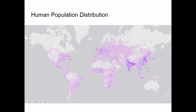One of the things you'll notice is that in the United States, we see this line that divides the eastern part of the country from the western part. In Canada, in contrast, most of the population is right along the southern border. In Mexico, it's fairly uniformly distributed.